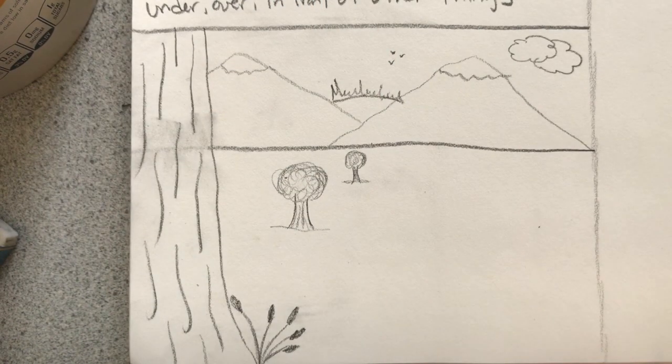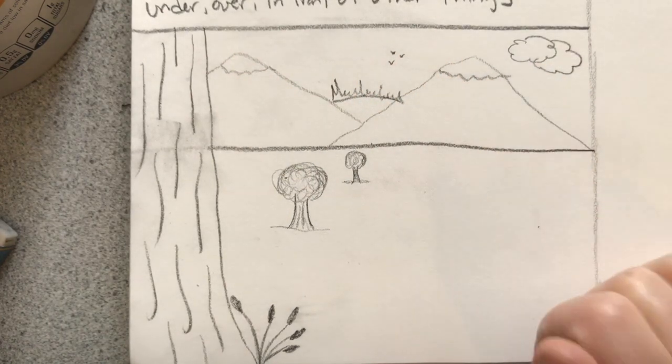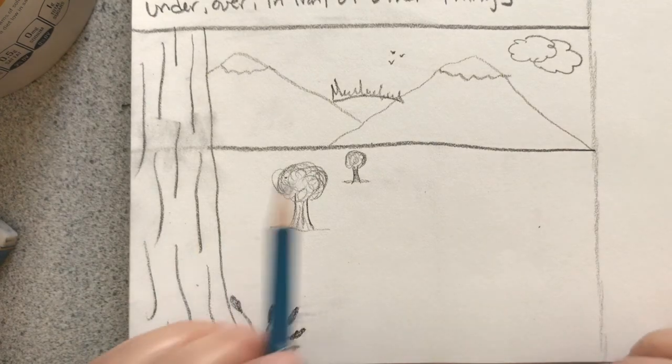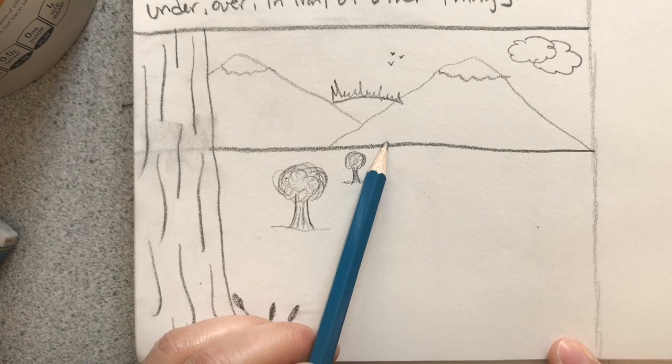These are the things in your background. They're above your horizon line, they're the furthest away. Now let me show you how to draw things that go from the horizon line to the foreground.